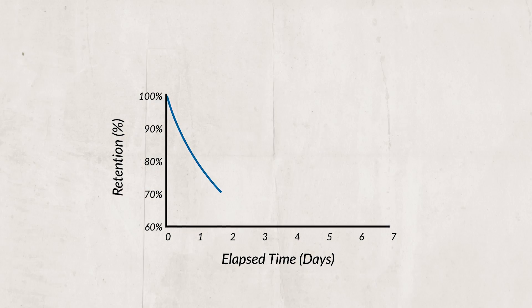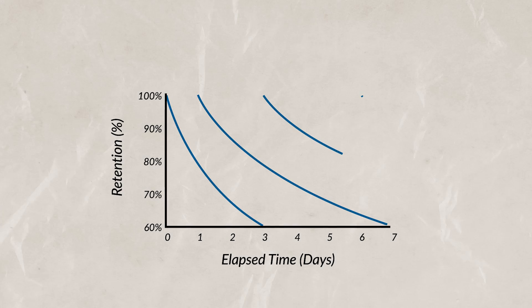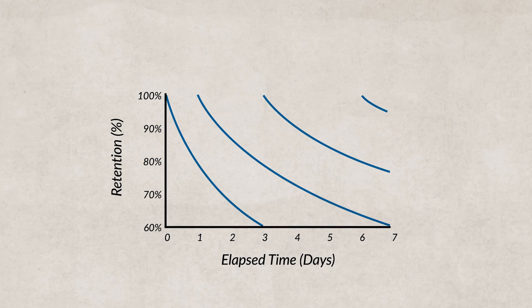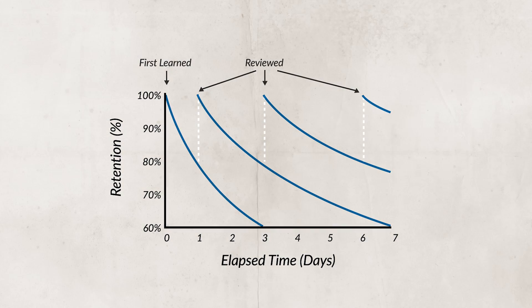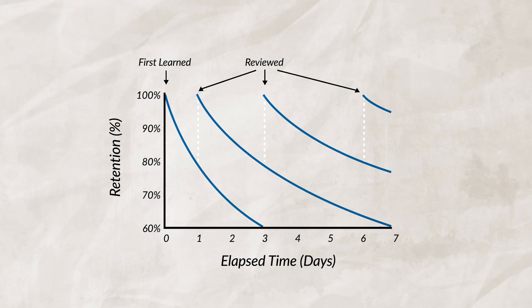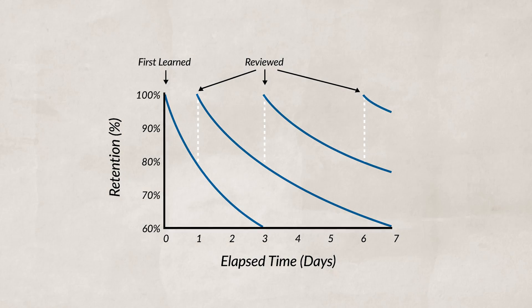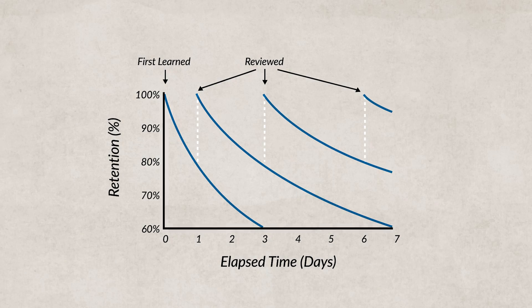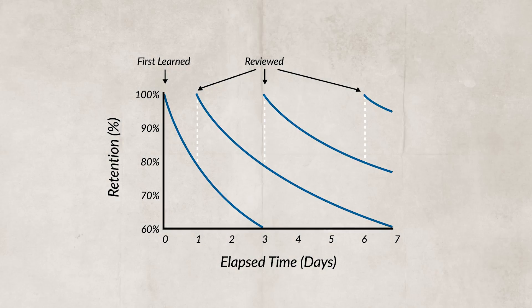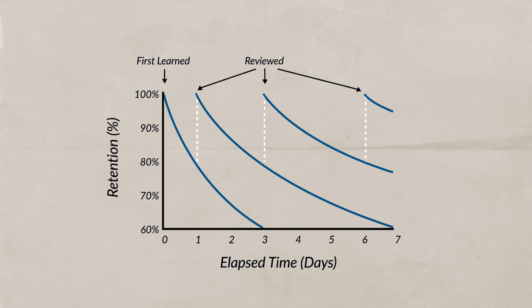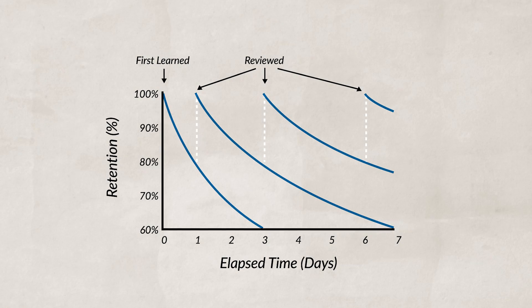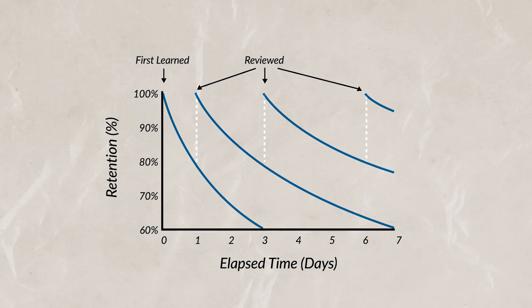Ebbinghaus looked at learning and memory by conducting an experiment where he tried to learn nonsense syllables. He found that the more he practiced the list of nonsense syllables on the first day, the less time was required for him to relearn it on the second day — a negative correlation between study time and time needed for relearning. When he spaced his studying out, utilizing the spacing effect, he was able to retain more and more information.